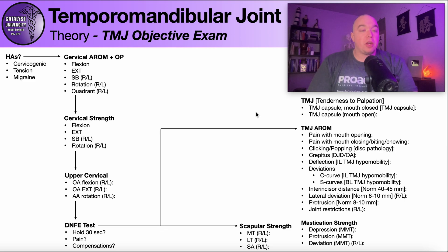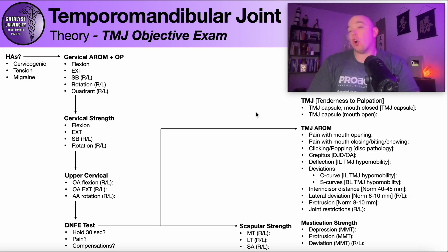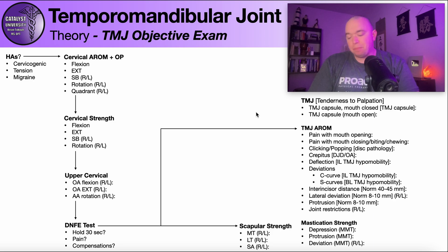It's always wise to start with the neck. The first item is asking if the patient has headaches — that's really part of the subjective exam — but I include it here because it gives us a really good idea of whether or not there's any neck dysfunction in the first place. A lot of times these headaches go with the jaw pain. The three main types of headaches we're concerned with are cervicogenic, tension, and migraine. Now you might say only the cervicogenic is related to the neck.